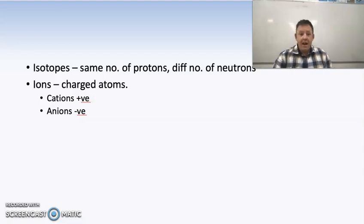We also have charged atoms, which are called ions. Cations are positively charged, they lose electrons. Anions are negatively charged, they gain electrons.